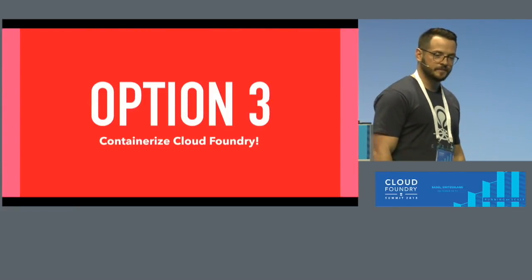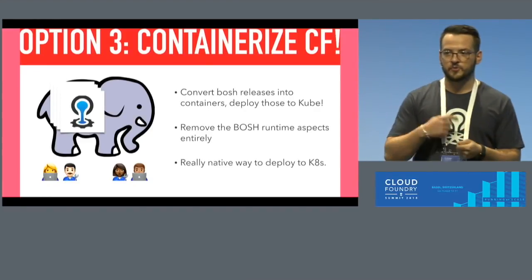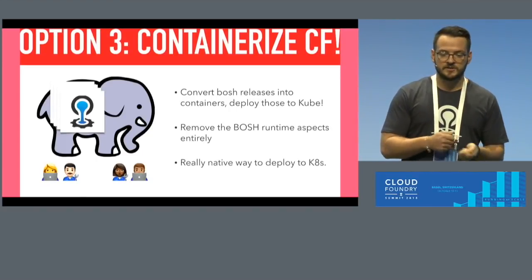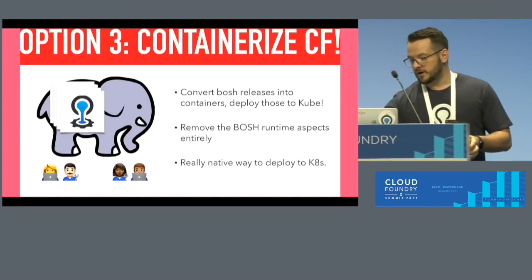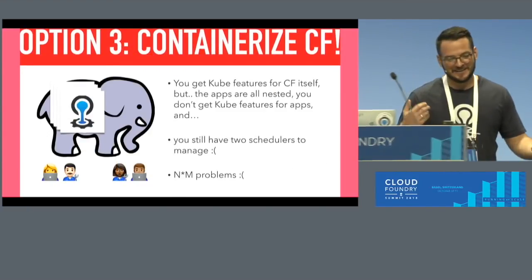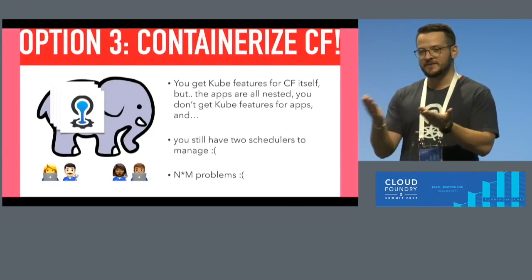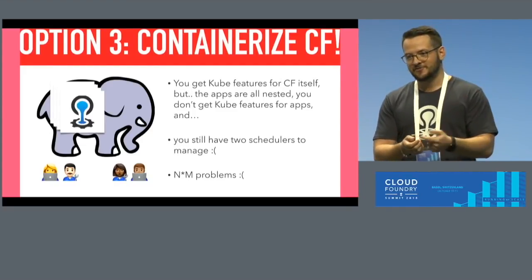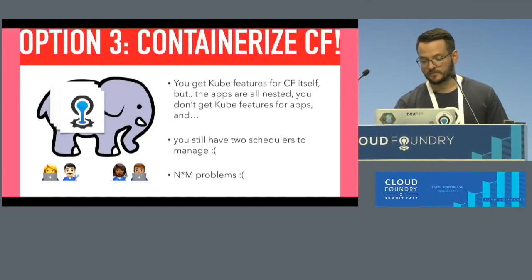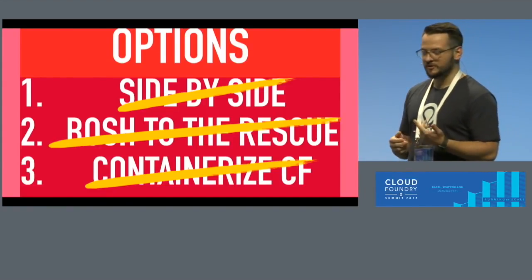Option three is containerized Cloud Foundry — converting BOSH releases up front before deploying, then using Kubernetes-native ways like Helm to deploy Cloud Foundry. That's now available on IBM Cloud as Cloud Foundry Enterprise Edition. But we still have that complex thing inside another complex thing — the Diego scheduler inside the Kubernetes scheduler, scheduling containers into containers. Nested containers. We still have the N times M problem.